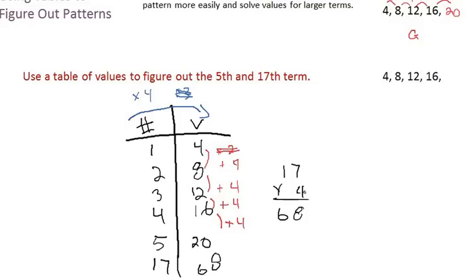So our answer is 68 for the 17th term and 20 for the 5th term.